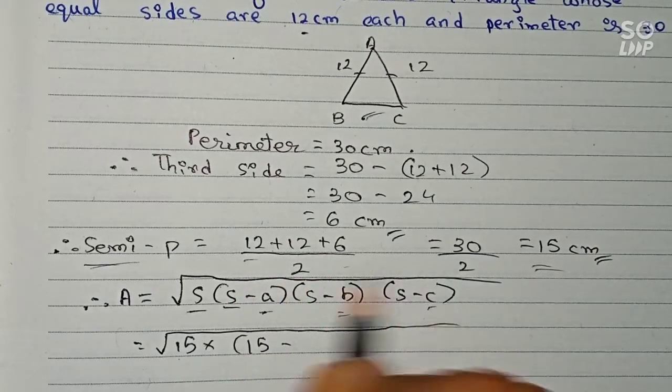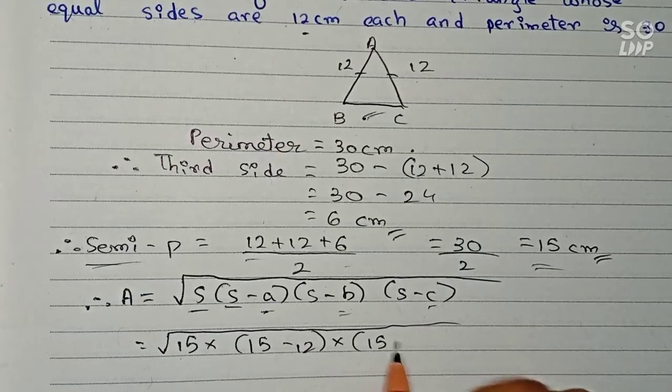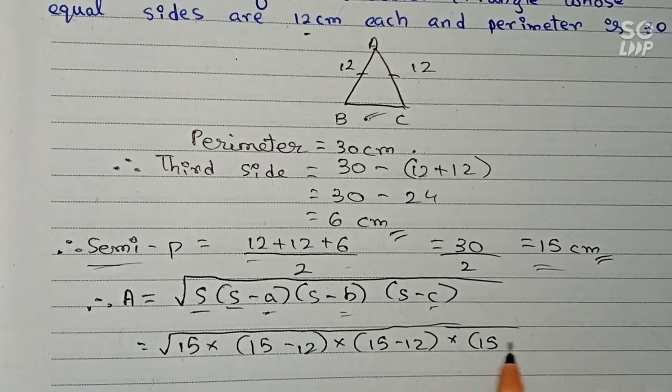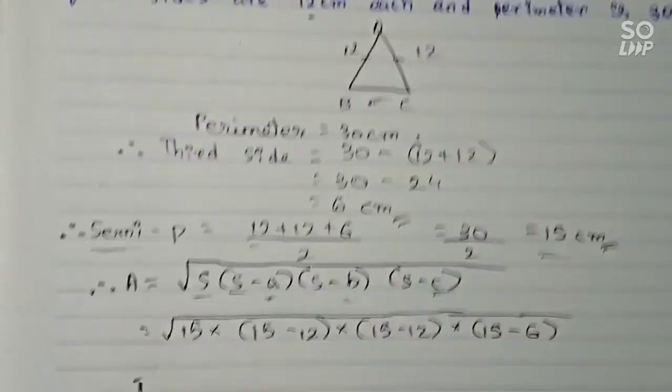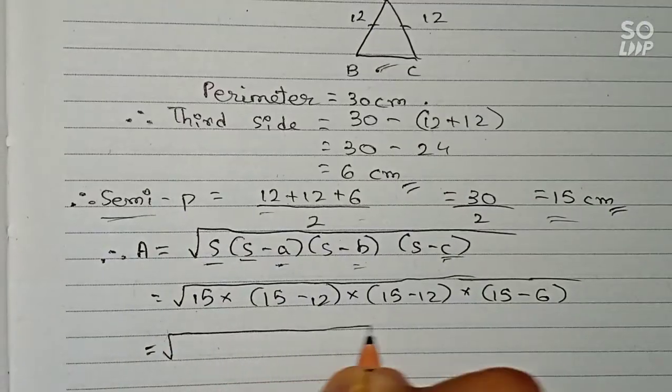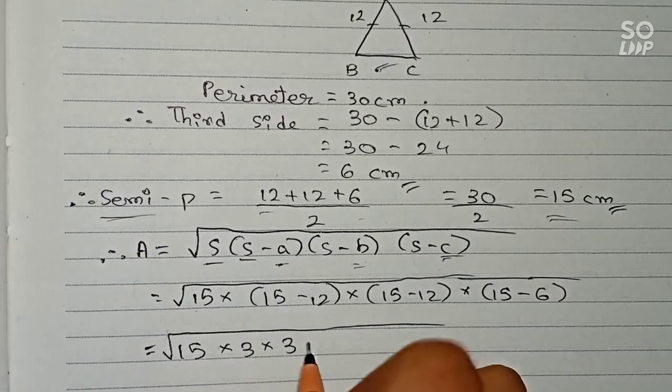B is 12 and c is 6. So 12 here, multiplied by 15 minus 12, also multiplied by 15 minus 6. So it will become 15 times 3 times 3 times 9.